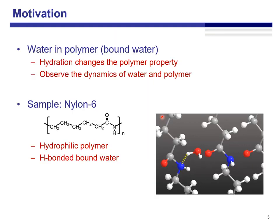In this study, we tried to measure the spectra of bound water. It is known that hydration changes polymer properties. So by observing the dynamics of water and polymer, we tried to figure out how bound water changes the dynamics of the polymer. The sample is Nylon 6. Nylon 6 is known as a hydrophilic polymer, and the bound water makes hydrogen bonds inside, maybe like this figure.